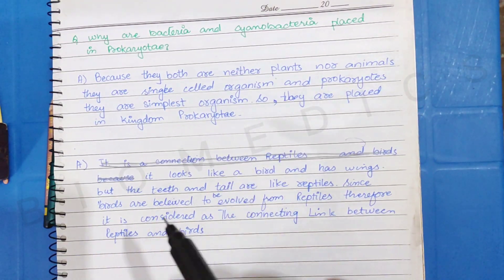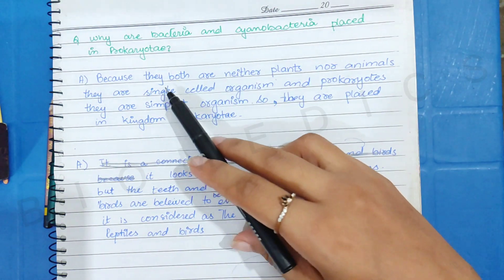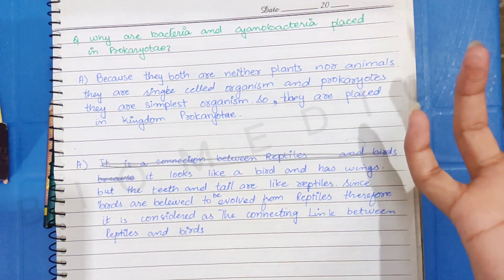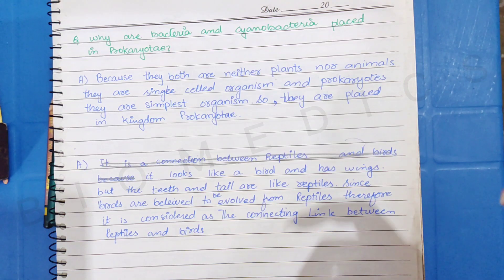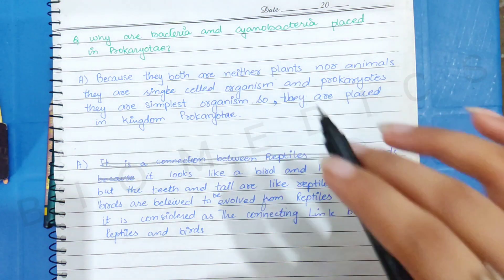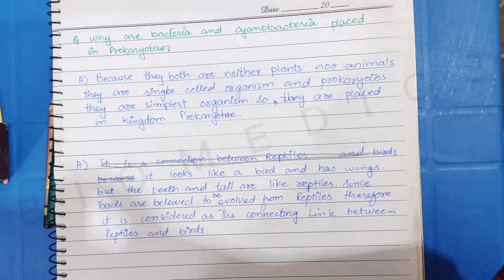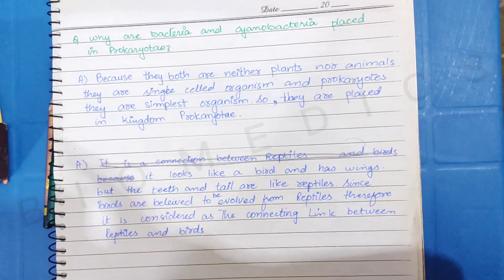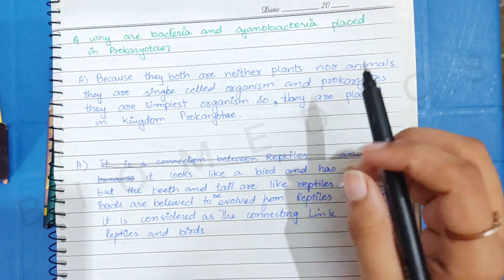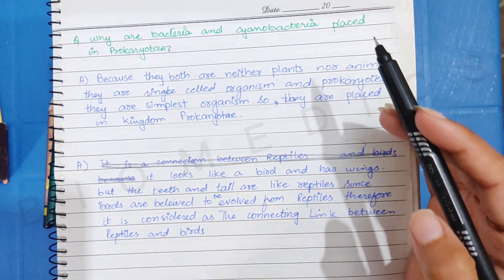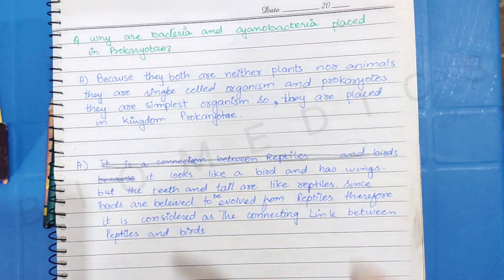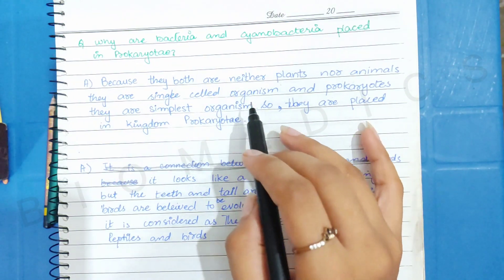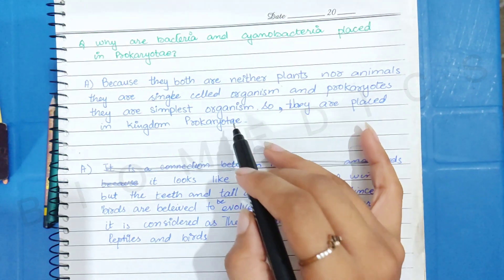Now, why are bacteria and cyanobacteria placed in prokaryotes? Why do we keep in prokaryotes? You should know that both are plants and animals, and they are made of single-cells, and prokaryotes, they are not known as membrane-bound organelles. So this is why they are the simplest organism in the form of the world, and they are kept in prokaryotes.